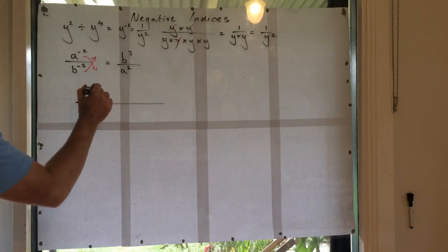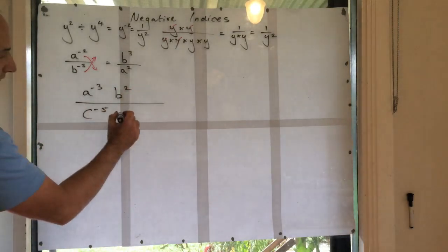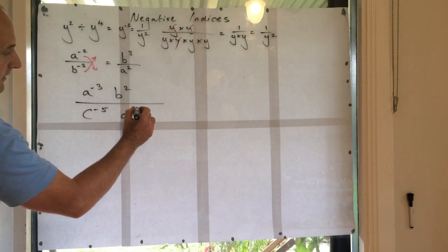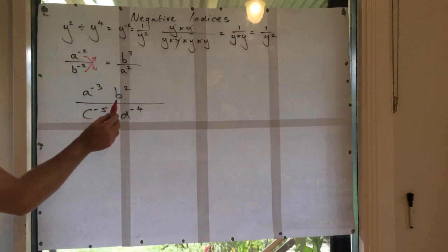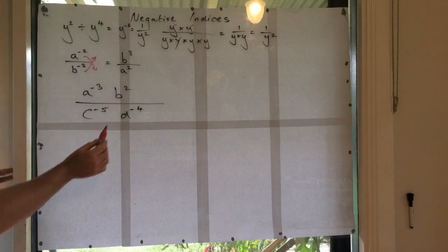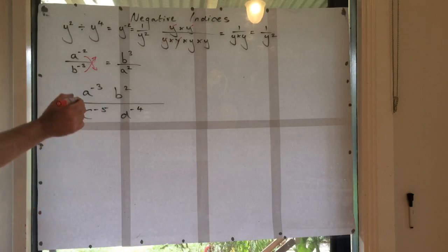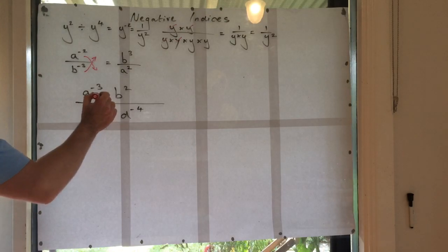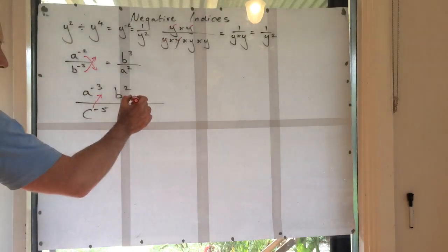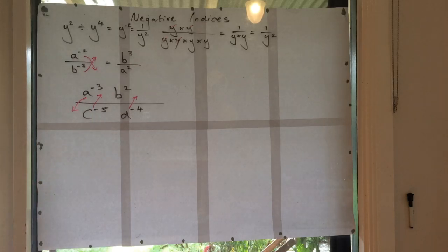So I might say a to the negative 3, b to the 2, c to the negative 5, d to the negative 4. So what's the things that we have to move? Do I have to move this b squared? No, I don't. That's a positive indice, so that can stay where it is. But everything else has to move. So this goes up to the numerator, this goes up to the numerator, and this goes down to the denominator. Only the things which are negative indices must move.